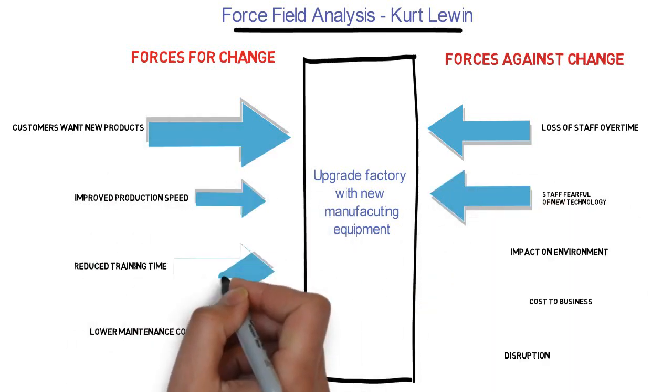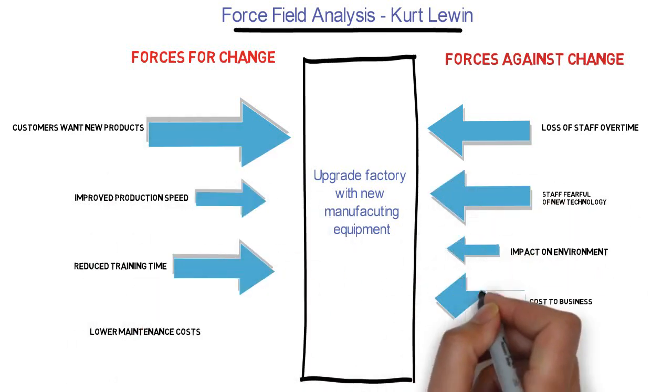For a visual representation of the influence that each force has, draw arrows around them. Use bigger arrows for the forces that will have a greater influence on the change, and smaller arrows for forces that will have less of an influence.